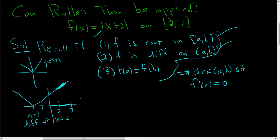So the first two conditions check. You have to be careful - just because it's an absolute value function, you can't say it's not differentiable. This one is differentiable between 2 and 7, and that's what we're concerned with.